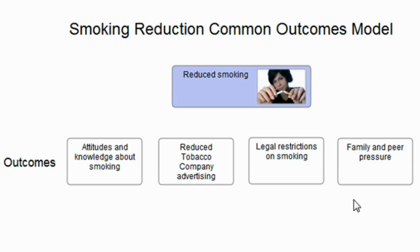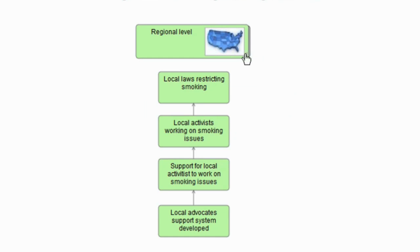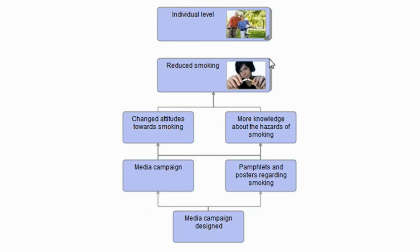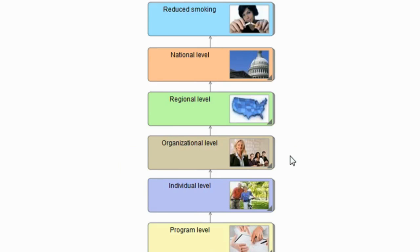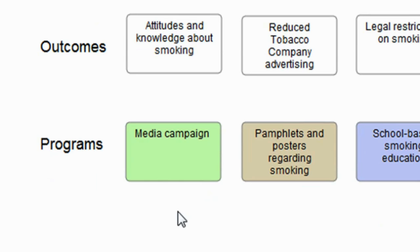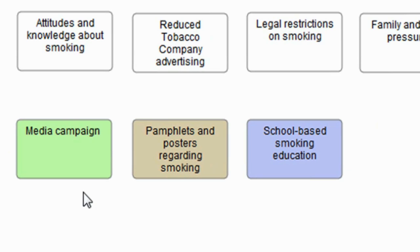In a normal case the diagram would be much more complicated than this, and if we were working within DoView software we may have a number of sub-pages which set out this diagram in some detail. But using this illustrative example, along the bottom of the diagram are a set of three programs being run: a media campaign, pamphlets and posters regarding smoking, and a school-based education program.